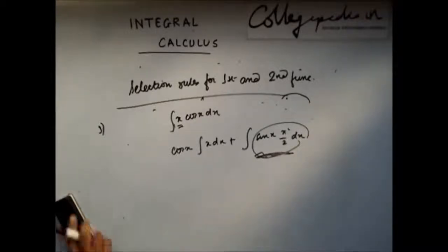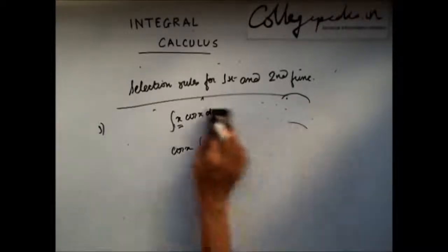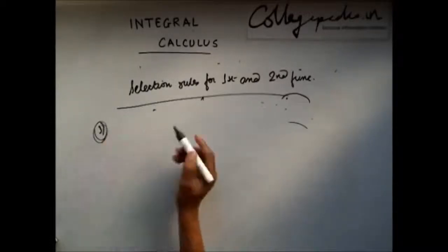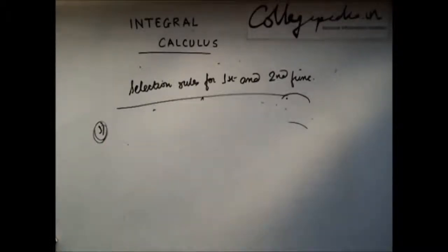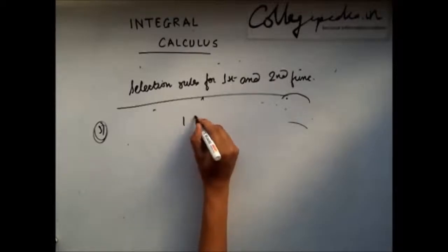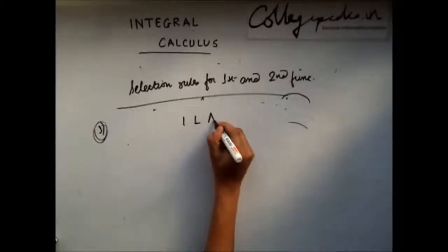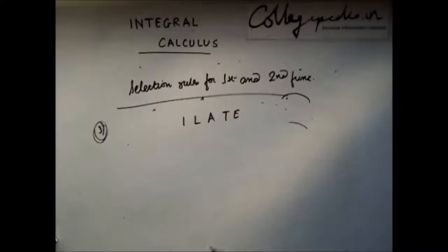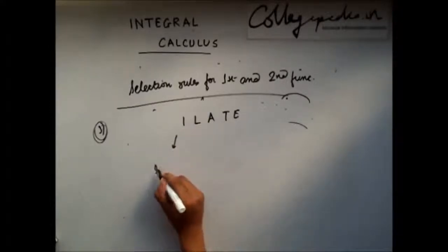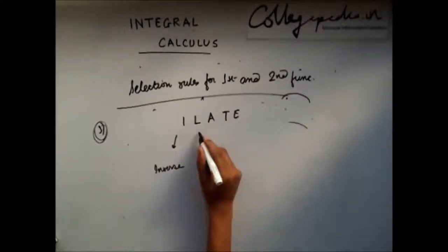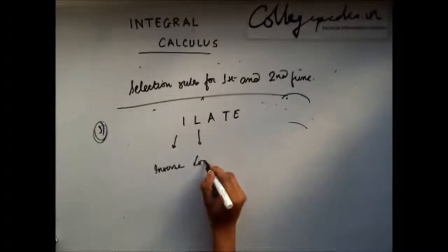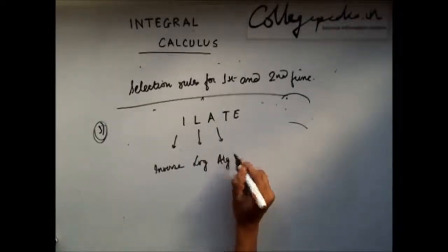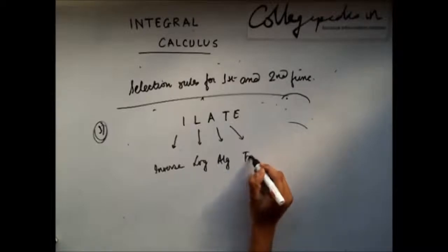There is a rule of thumb we follow when both u and v are directly integrable, known as ILATE. I stands for Inverse trigonometric functions, L stands for Logarithmic functions, A stands for Algebraic functions, T stands for Trigonometric functions, and E stands for Exponential functions.